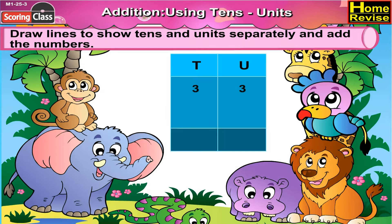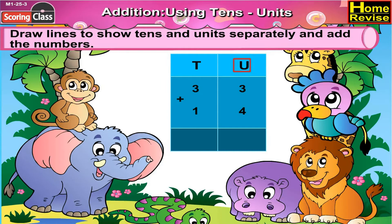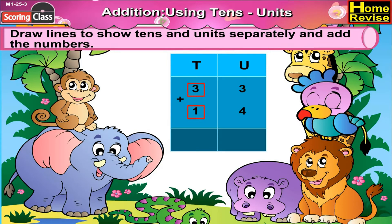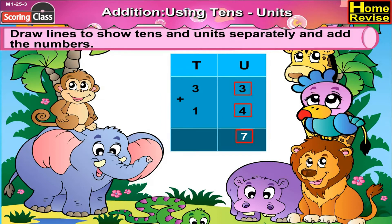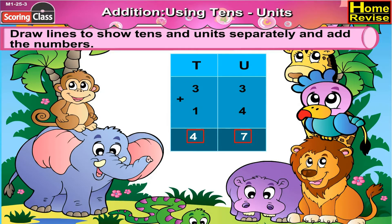Next is 33 plus 14. Now let us draw a line between 33 and 14. Write units above 3 and 4 and tenths above 3 and 1. Now 3 plus 4 is 7 and 3 plus 1 is 4. So 33 plus 14 is 47.